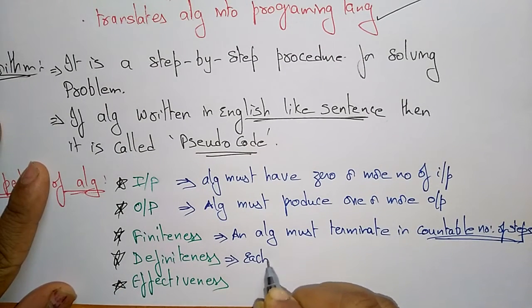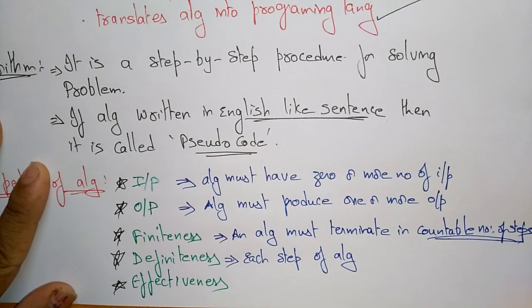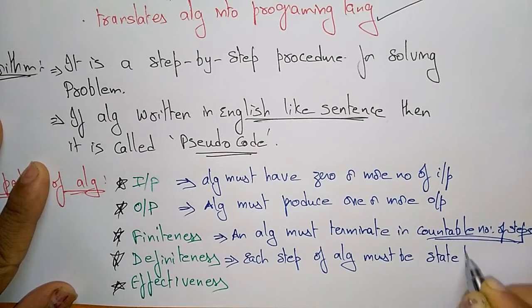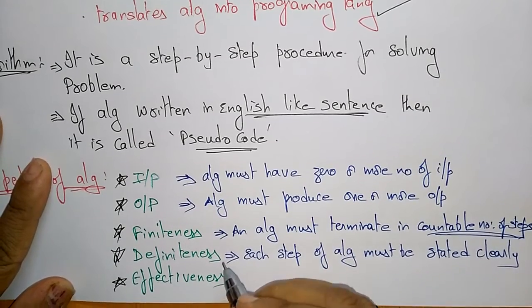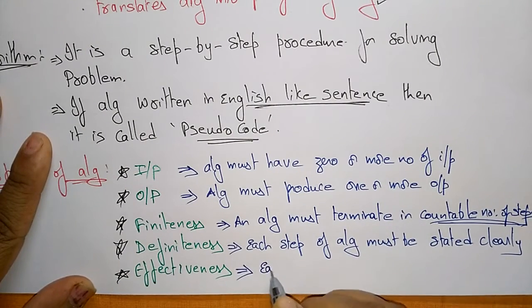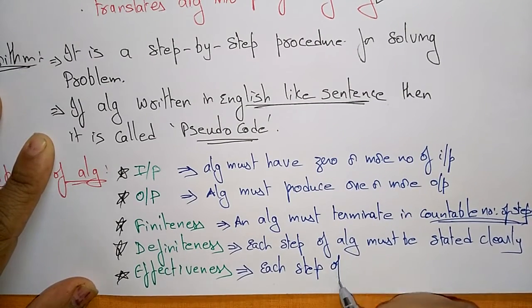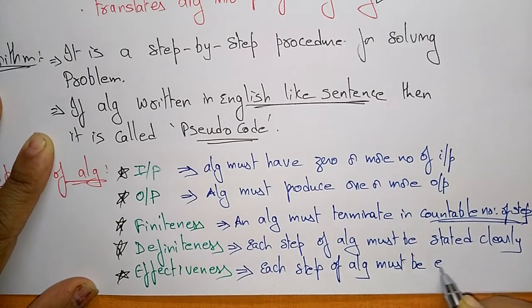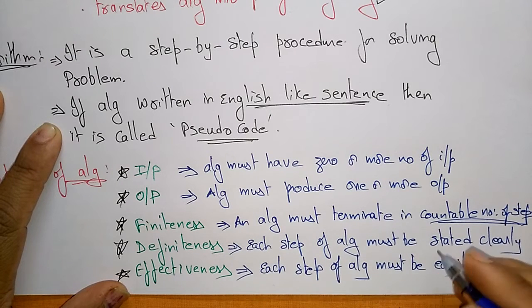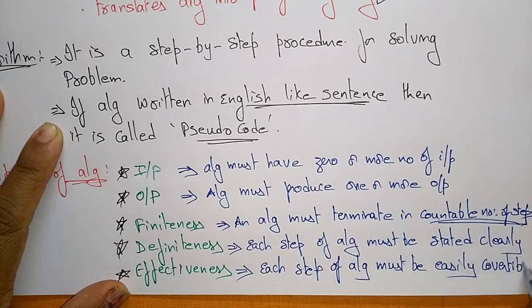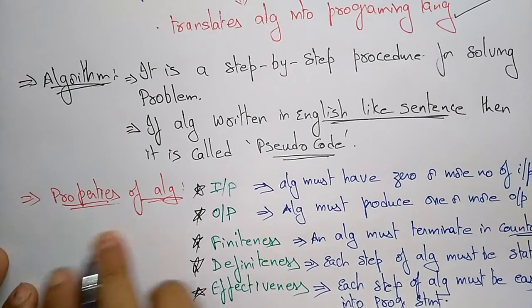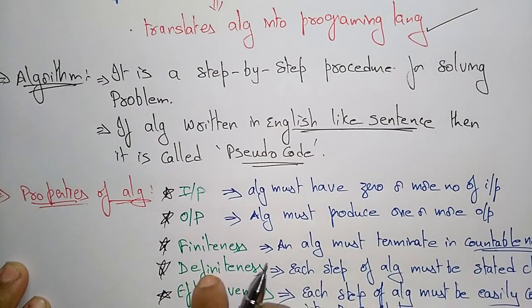Next, what is definiteness? Definiteness means each step of the algorithm must be stated clearly — that is called definiteness. Then what is effectiveness? Effectiveness means each step of the algorithm must be easily convertible into a program statement. So whatever algorithm step we have taken, that must be easily convertible into a program statement. These are the different properties of algorithm: input, output, finiteness, definiteness, and effectiveness.